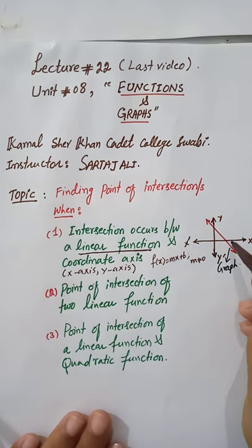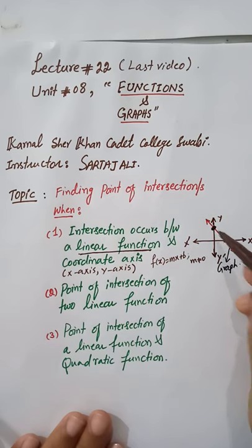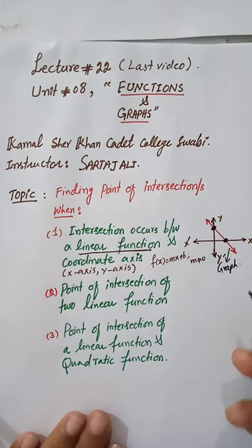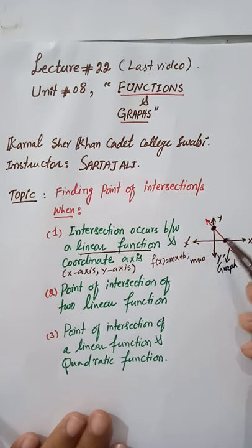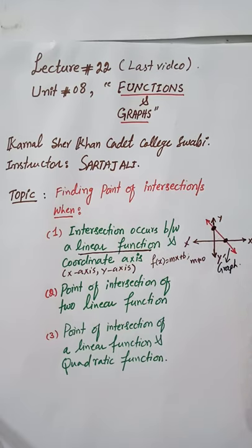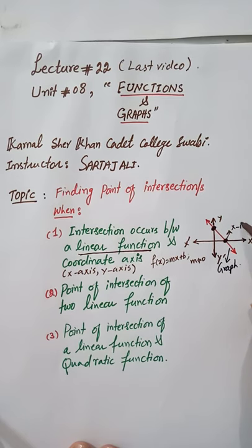You can clearly see that the graph of a linear function, which is a straight line, intersects the x-axis at one point and the y-axis at another point. These are the intersections between the graph of a linear function and the coordinate axis. These points of intersection are actually the x-intercept and the y-intercept. This point here is the x-intercept and this point is the y-intercept.